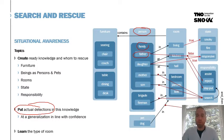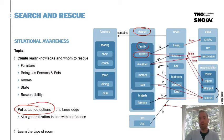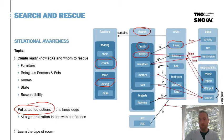What you can also do is learn the type of room based on the furniture and objects found in it. So if you find, for example, a dining table and a couch, then most likely you know that you are in the living room.